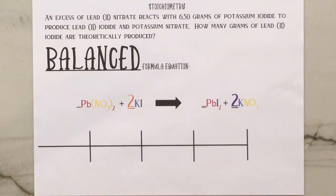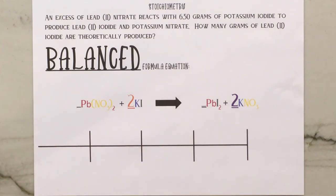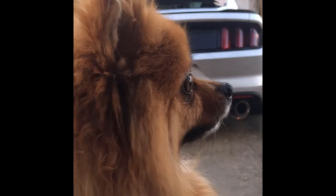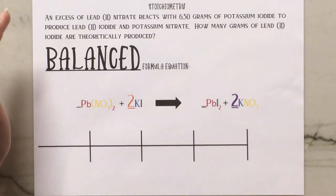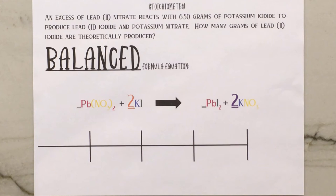Before we start getting to the math of this, let's talk about exactly what this means. Typically when I tell my students that we are going to move on to our stoichiometry chapter, this is the reaction that I get. Before now, we have just been looking at equations and there haven't been any measured values and numbers associated with them. But stoichiometry is Greek and it means measuring elements, so now we are going to incorporate amounts into the problem.